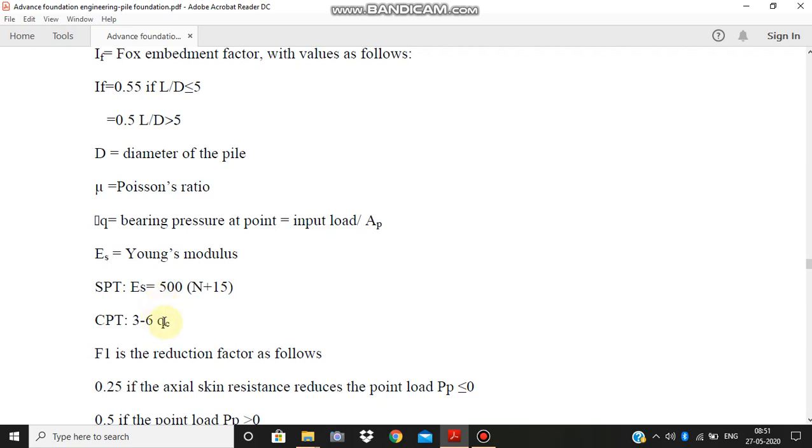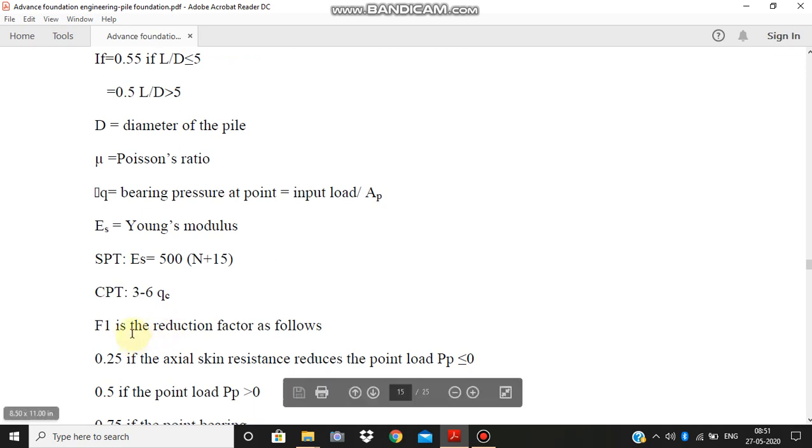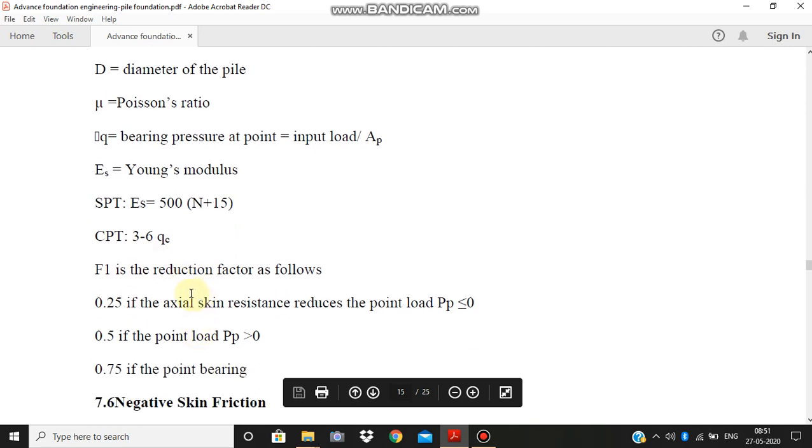And for CPT, cone penetration test value, it is 3 to 6 Q_c, where Q_c is the value of cone resistance. F_1 is a reduction factor which is given as follows: it is 0.25 if the axial skin resistance reduces the point load P_p less than or equal to 0; 0.5 if the point load P_p is greater than 0; and 0.75 if the point bearing is nearly equal to 0.